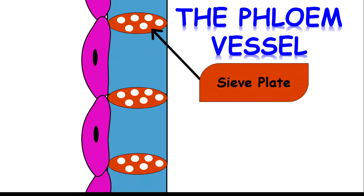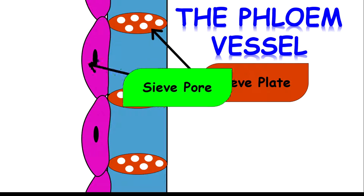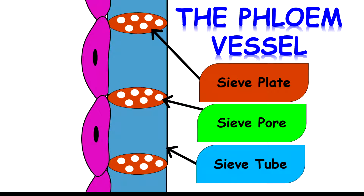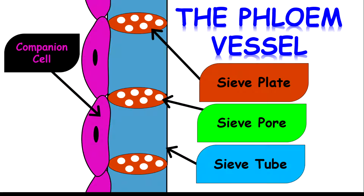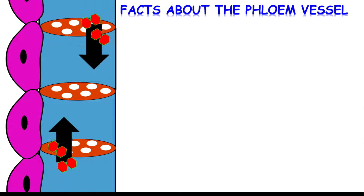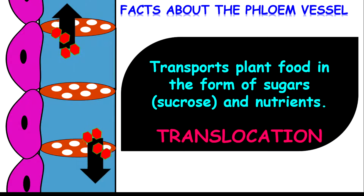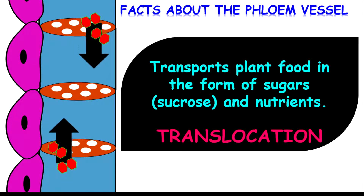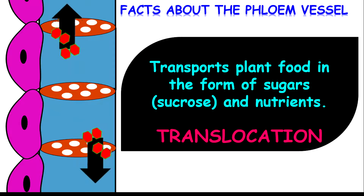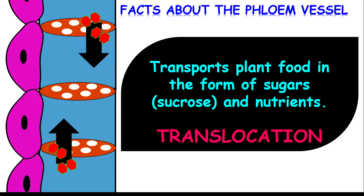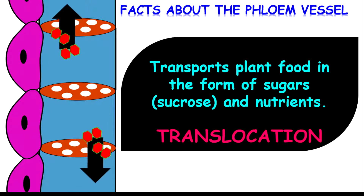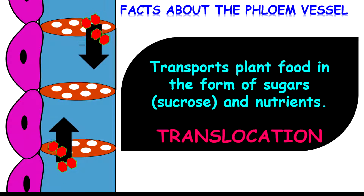The phloem vessel contains a sieve plate, sieve pores, and also the sieve tube. Together, all of these structures make up what is called the sieve cell or sieve tube cell. On the side of the sieve tube, you have companion cells. The phloem transports plant food in the form of sugars, particularly sucrose, which is a disaccharide — represented as two hexagonal shapes joined together — as well as other nutrients.